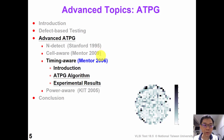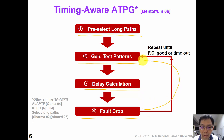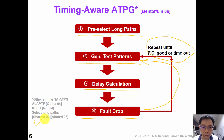Now let's introduce a timing-aware ATPG example proposed by Mentor Graphics in 2006. In the first step, we pre-select long paths in the design; then we generate test patterns; then we calculate the delay; and we drop detected faults that meet our fault-dropping criteria. This process is repeated until we have enough fault coverage or timeout. Please note that this is just one example — there are also other timing-aware ATPG algorithms available in our references.